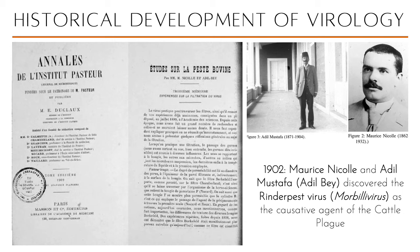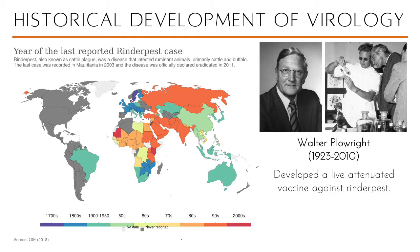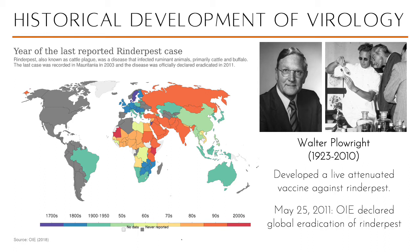In 1902, Maurice Nicole and Adele Mustafa — more commonly known as Adil Bey — discovered the Rinderpest virus, which had been causing high mortality rates in cattle worldwide, known as the cattle plague. Walter Plowright later developed a live attenuated vaccine against Rinderpest by using a monolayer of kidney cells to culture the virus until it became non-virulent, producing lifelong immunity — which led to the global eradication of Rinderpest.